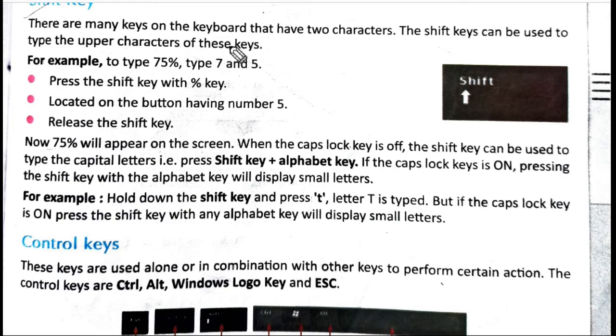For example, to type 75%, first press the Shift key with the percent key. You have to press Shift and then press the percentage symbol, which is located on the button above the number 5. Then release the Shift key. After you release the Shift key, 75% will appear on the screen.